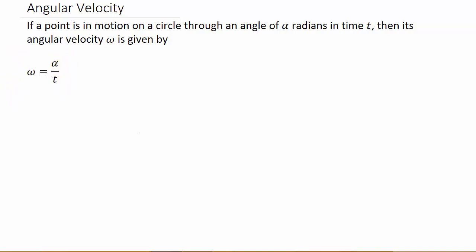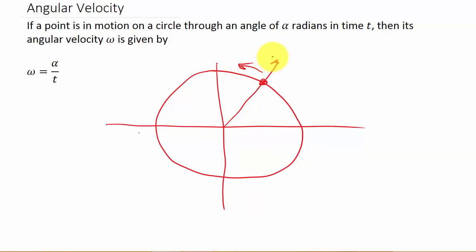So just to draw you a picture, if we have a circle here and let's say that we have an object moving around the circle, and here's alpha. So if this object's moving around the circle, this angle here is changing. And that's what angular velocity is.